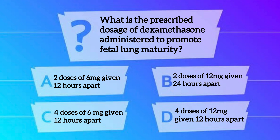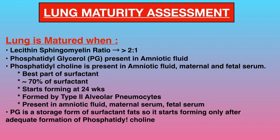So which option do you think is the right one? Yes, Option C — 4 doses of 6 mg given 12 hours apart — is the correct option. Now let's understand how is lung maturity assessed. Lung is considered to be matured when the lecithin-sphingomyelin ratio is more than 2:1.